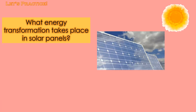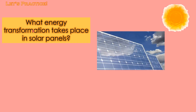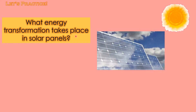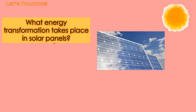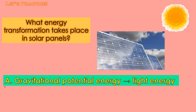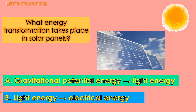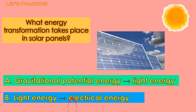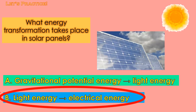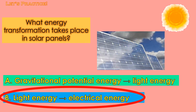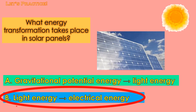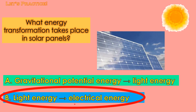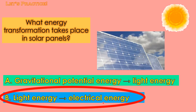Students, look at this one. What energy transformation takes place in solar panels? Choose A or B. One, two, three. Your answer is correct — it's B. Let's read: light energy transforms into electrical energy.